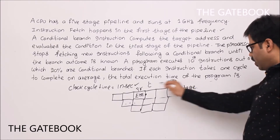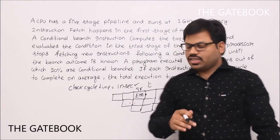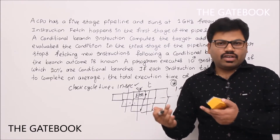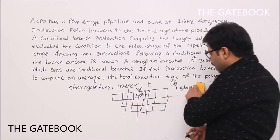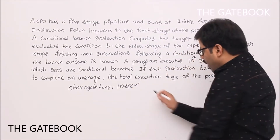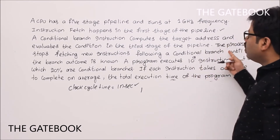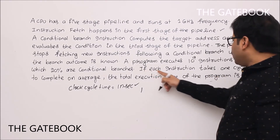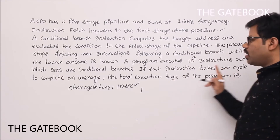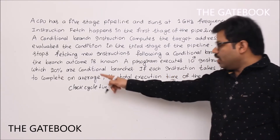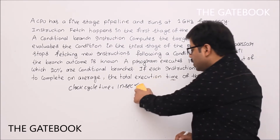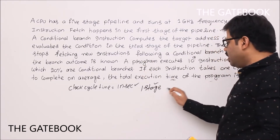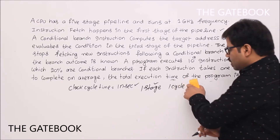To emphasize: if your pipeline runs full-fledged, we are sharing the stages, so for every stage delay we are getting one instruction out. In this problem, each instruction takes one cycle to complete on average — that is clearly mentioned. So each stage is taking one cycle, meaning each instruction takes only one cycle time.